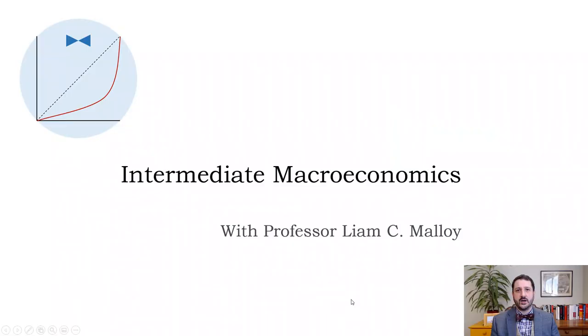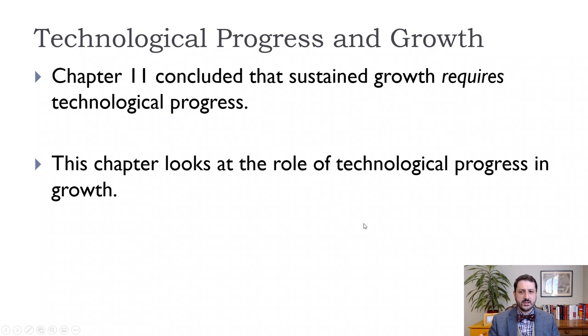What we saw in Chapter 11 was that capital is extremely important for the level of economic output. We need more capital per worker to produce more. But there is a golden rule level of capital where if we have more capital per worker, we actually reduce consumption because we have to invest so much in order to increase our capital. So increasing capital is not actually the way to long-run growth. We want to think about what we mean by technological progress and how that relates to economic growth.